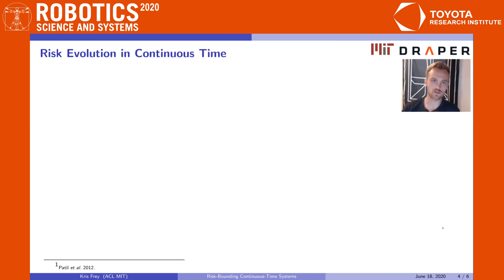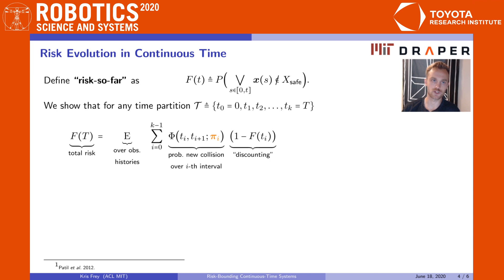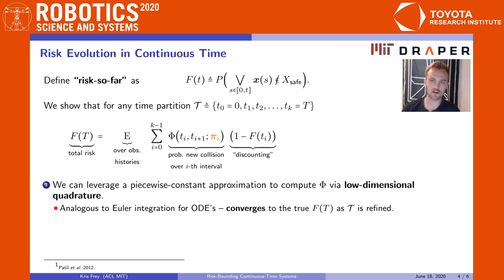To address this issue of accuracy while maintaining the benefits of a direct method, we take a fresh look at the evolution of risk directly in continuous time. Letting the function f correspond to the risk so far, we show that for any time partition of the overall planning horizon, the total risk can be written essentially as a sum over the probability of new collisions in each interval. In order to compute this function phi, we can leverage a piecewise constant approximation of the underlying process that is analogous to Euler integration of ODEs. Like Euler's method, the resulting approximation converges to the true risk as the partition is refined.